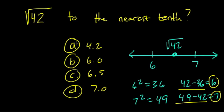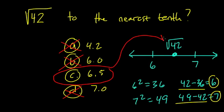So if I look at my choices now, 4.2 is out. It looks like they just took 42 and put a decimal in there. I need a number between 6 and 7. B is 6, D is 7, and 6.5 is the most reasonable and closest choice.